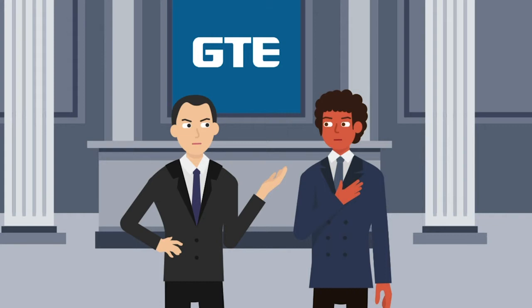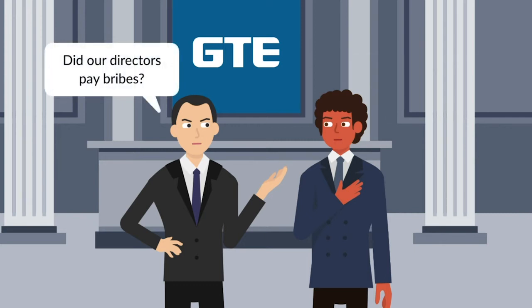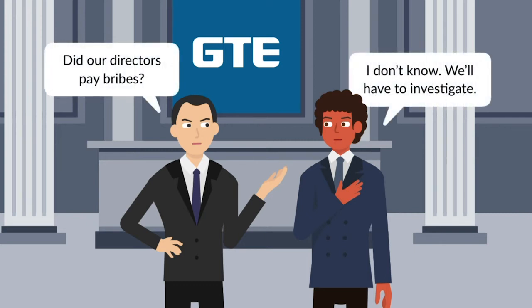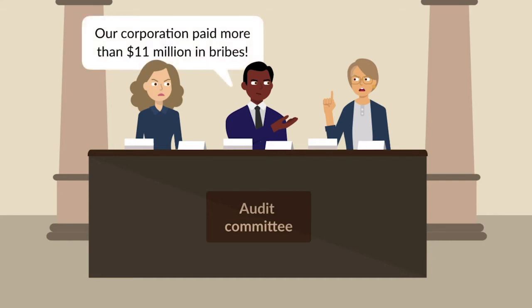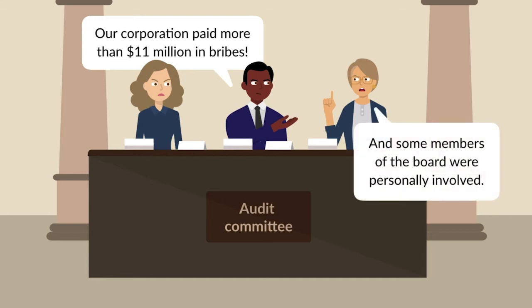In 1975, the managers of General Telephone and Electronics Corporation directed an internal investigation to ascertain whether its directors made questionable payments to public officials of political parties in foreign countries. The audit committee found evidence that from 1971 to 1975, the corporation had made payments abroad constituting bribes and kickbacks totaling more than $11 million. Additionally, the committee found that certain members of the board of directors had been personally involved in some of the transactions.